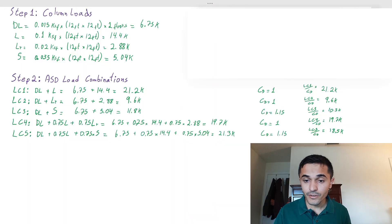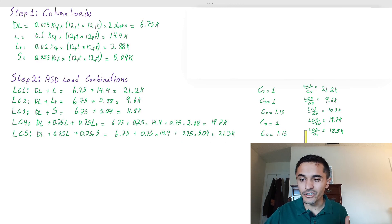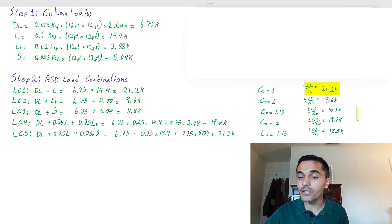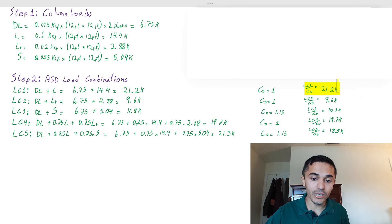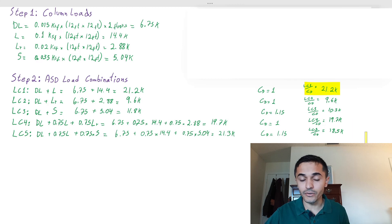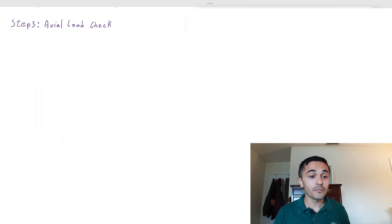Now that we've reviewed the code provisions, we divide our loading demand by C_d to get an adjusted loading demand. When I do that, I notice that my highest adjusted number is load combination 1, not load combination 5 as previously thought. This quick exercise lets us quickly spot which load combination actually controls. C_d is the only factor increasing our capacity, so we bring it to the other side of the equation to find what our adjusted demand really is.